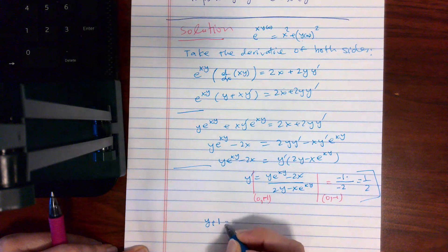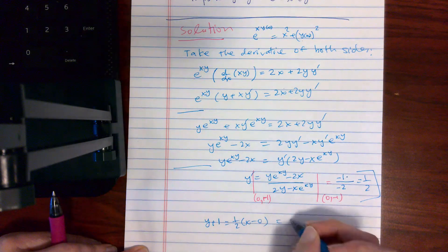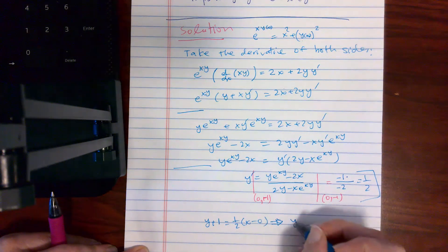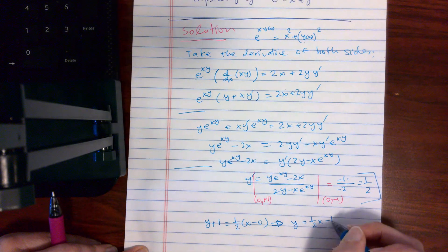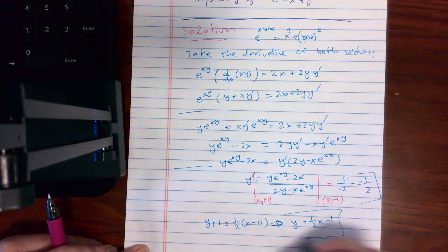Is equal to 1/2 x minus 0. So this gives you y = 1/2 x - 1. And that's the equation of the tangent line.